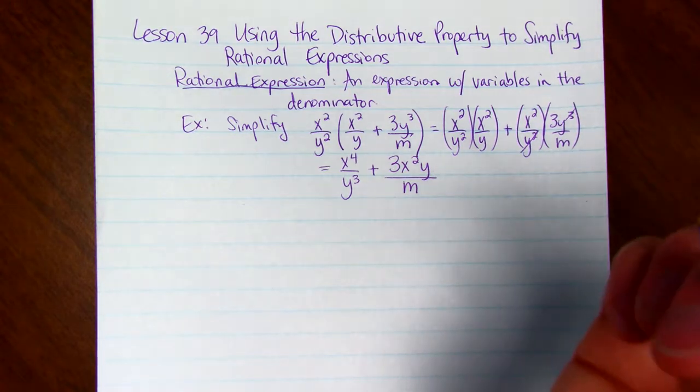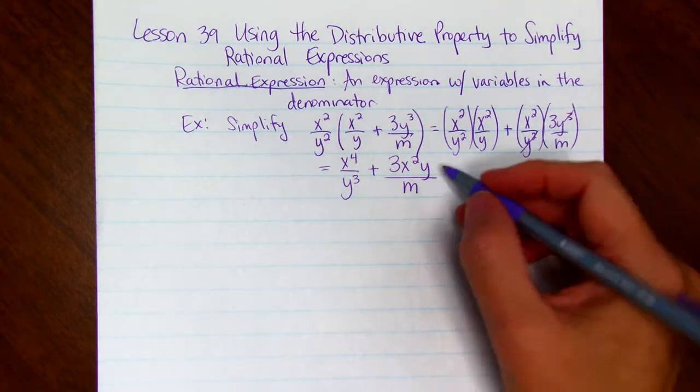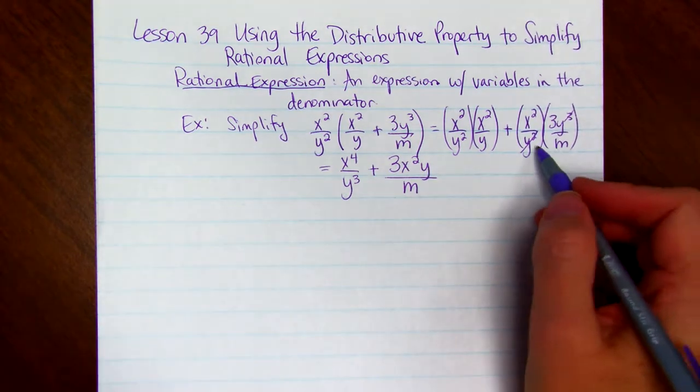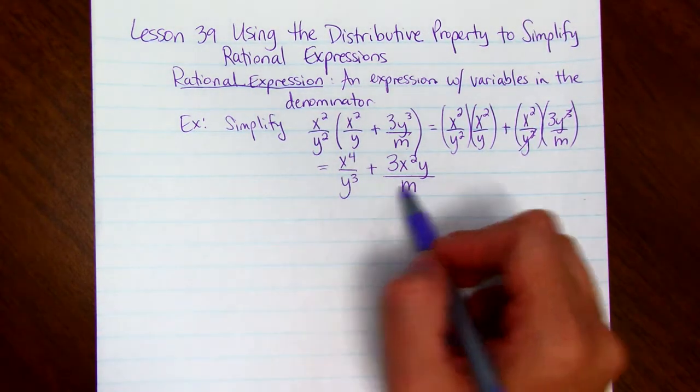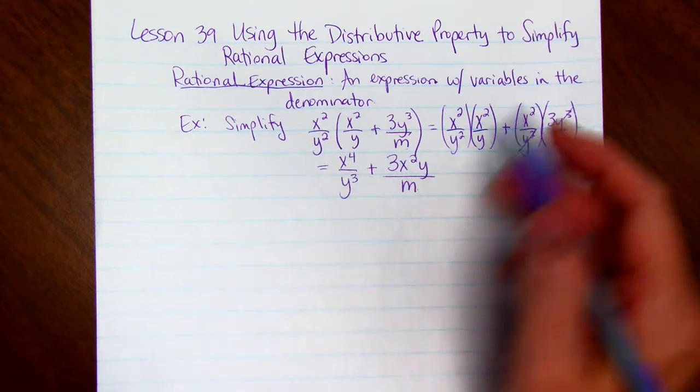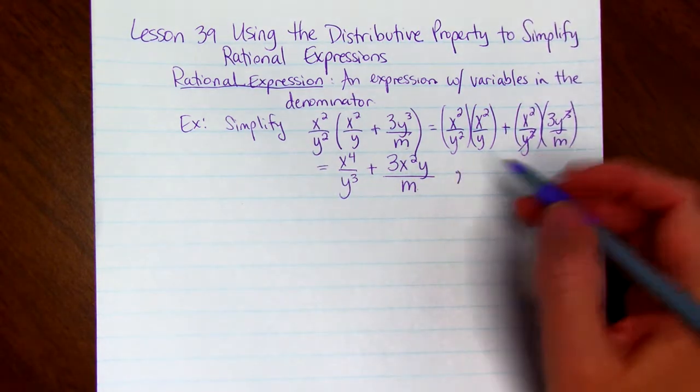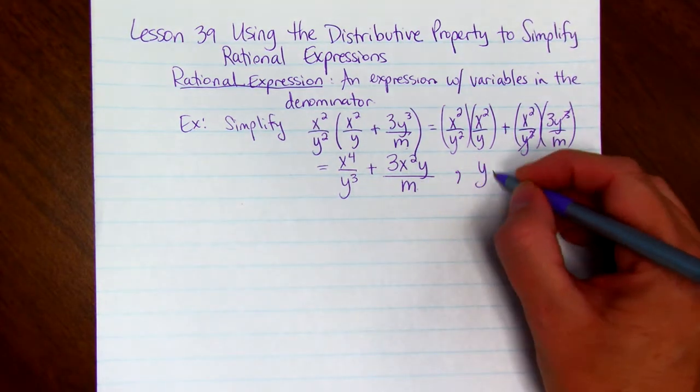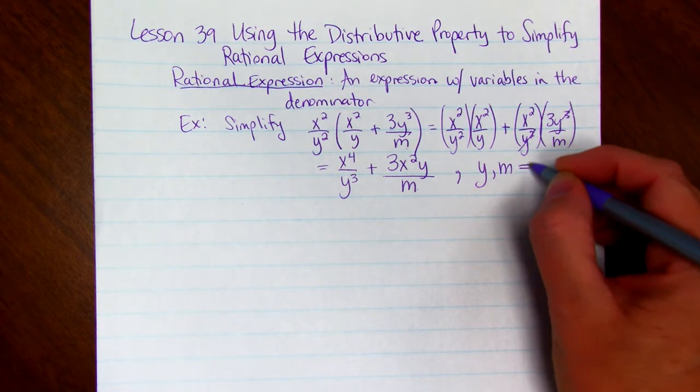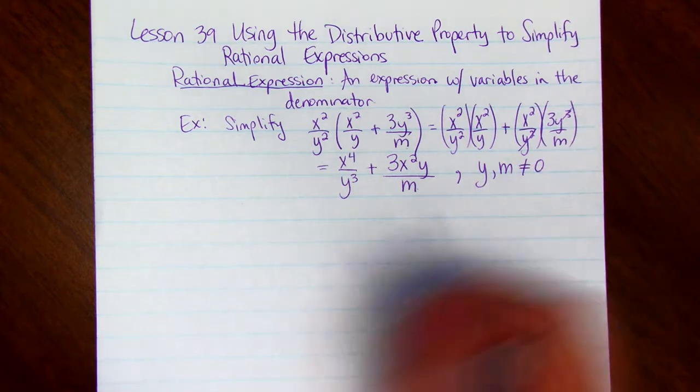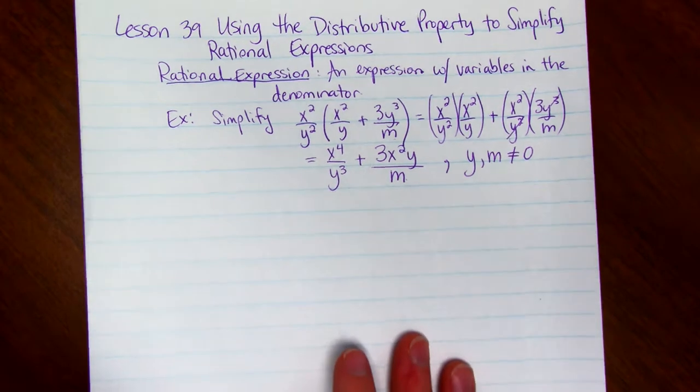Then we need to find the exclusions. That means what cannot be in the denominator. We look at the beginning and at the end. We have y's and m's. So we have to put a little comma after our answer and put y, comma, m cannot equal 0. That means neither of these can equal 0, because we can't have 0 in the denominator.